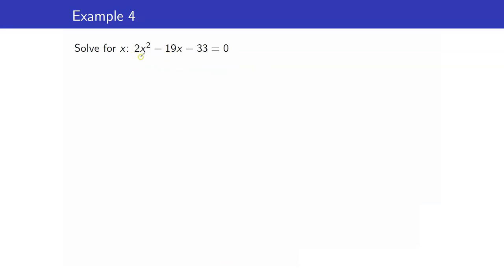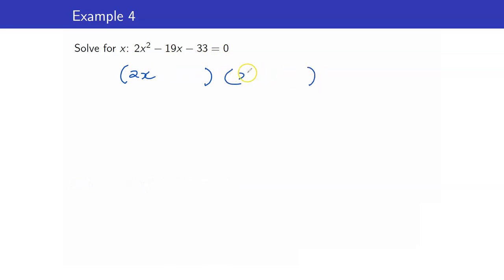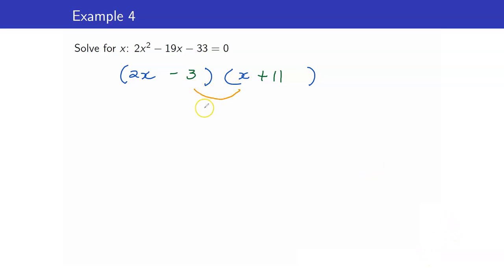For our last example, we have 2x squared minus 19x minus 33 equals zero. One side is already equal to zero, so we proceed by factoring. We place the factors of 2x squared — that is 2x and x — in the first positions, and the factors of negative 33 in the last positions. Trying 11 and negative 3: checking the outer and inner terms gives positive 22x, so the middle term sum is 19x — close but not quite, since we need negative 19x.